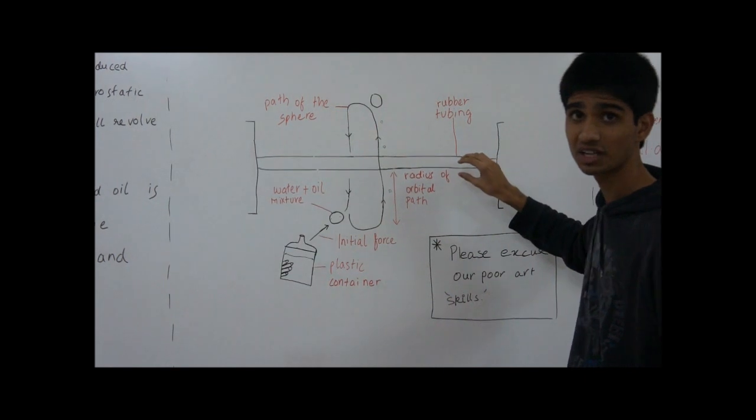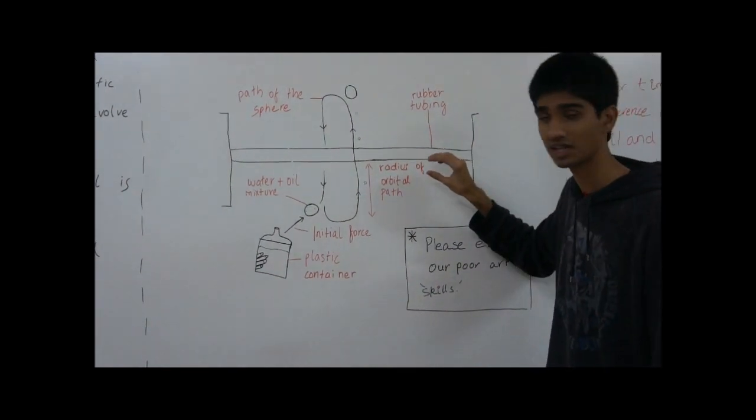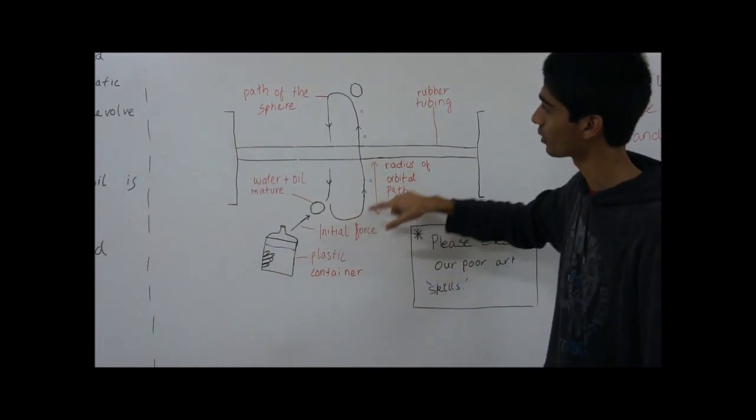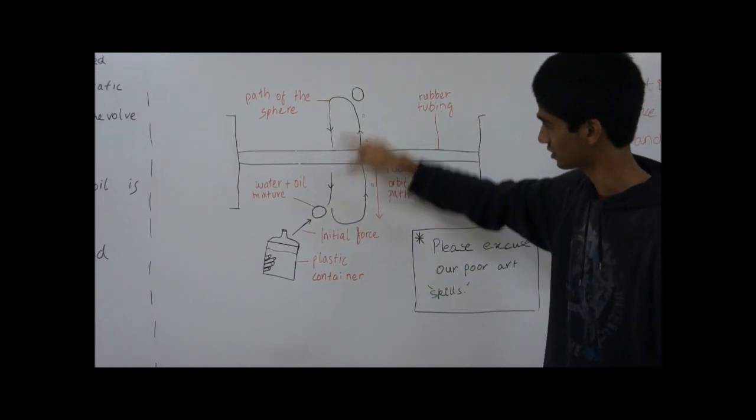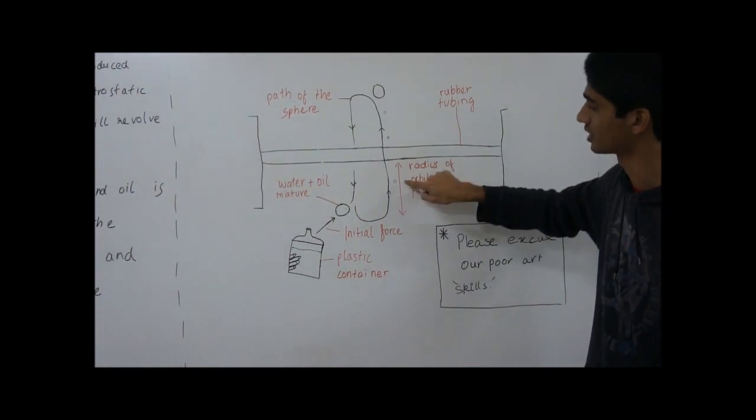So this is the rubber tubing which is the electrostatic energy source and hence produces an electric field. The sphere revolves around this rubber tubing in the path as shown, and these are the oil droplets that are left behind.